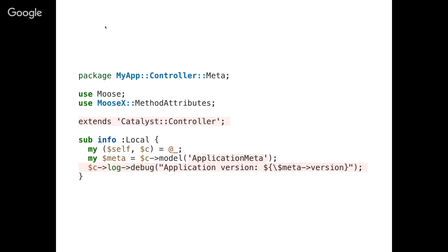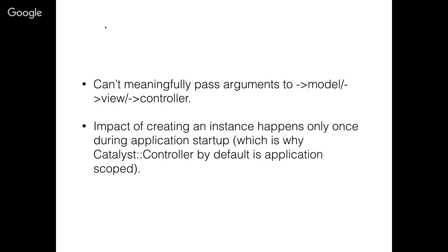Some things to remember about an application-scoped component: you never pass arguments to it, because it's already been made. All the component instantiation already happened. The biggest upside is the cost of creation happens during application start. That's why all Catalyst controllers are application-scoped — the thinking is that if you had to create new controllers for every request, it might be onerous. If you look at the Catalyst::Controller source code, you'll see it inherits directly from Catalyst::Component and doesn't do anything with acceptContext. The context gets set as an argument to the action.